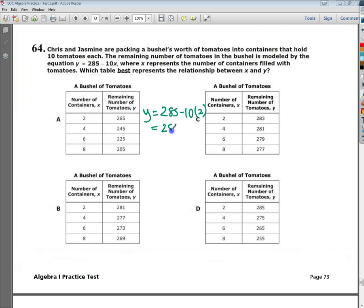and plug in a 2, because that's what it says to plug in, and then I end up with 285 minus 20 or 265. So, when I plugged in 2, I should get 265.